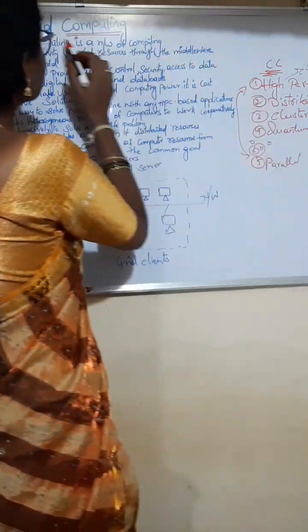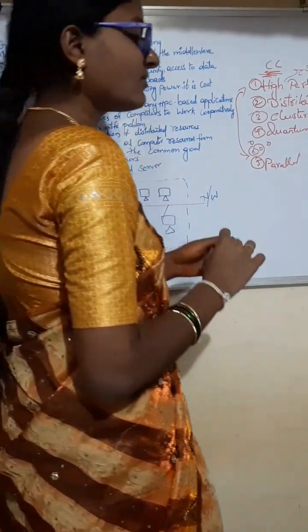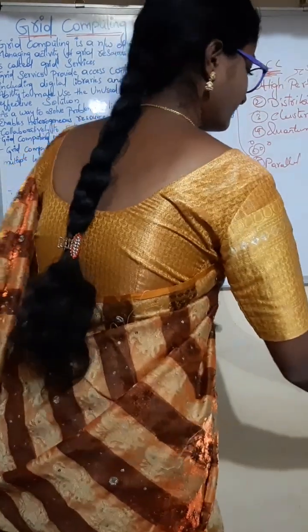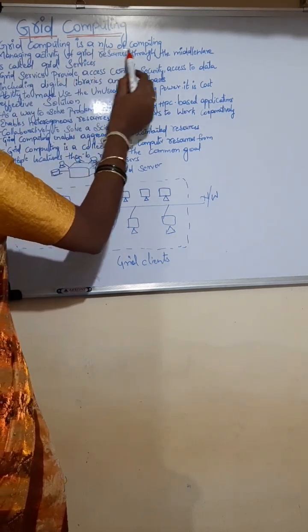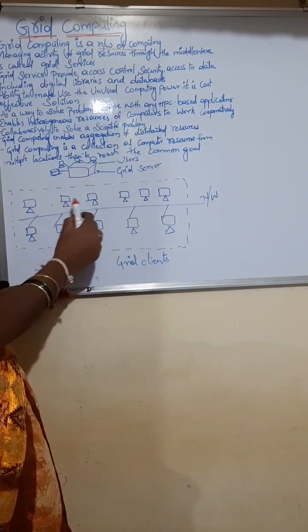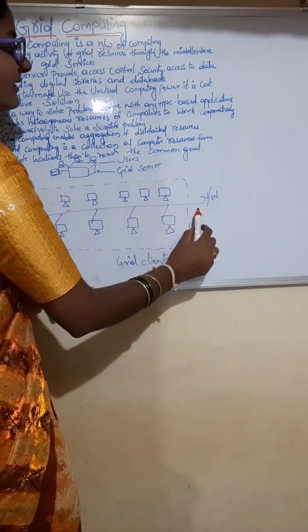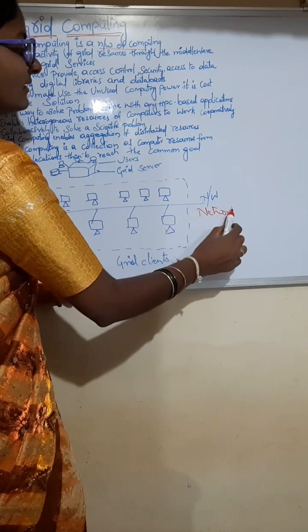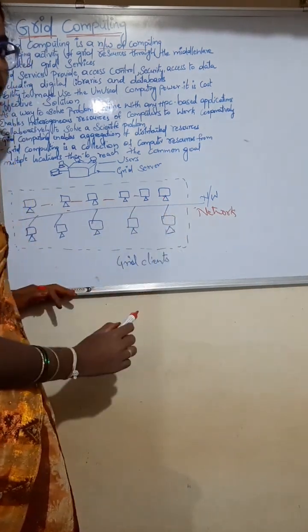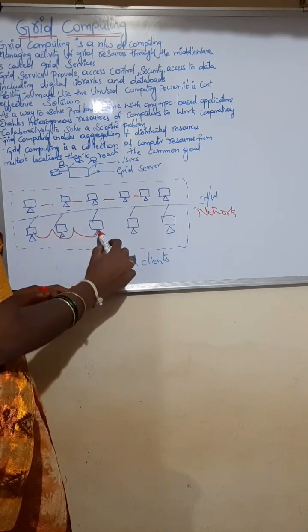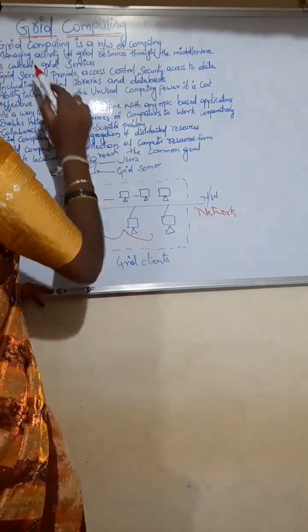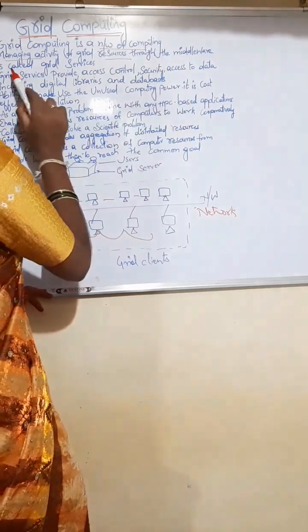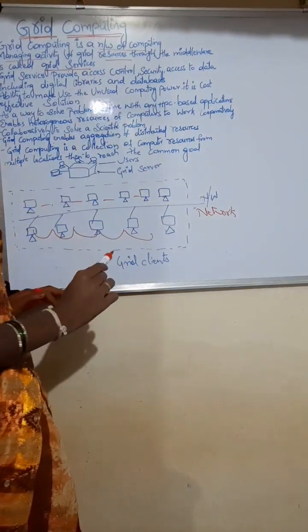Now we will see one of the techniques — grid computing. Grid computing means a network of computing. Different nodes, different computers are connected to the network and communicate with each another, one node to another node. Managing the activity of grid resources through the middleware is called grid services. Now we will see the topology.